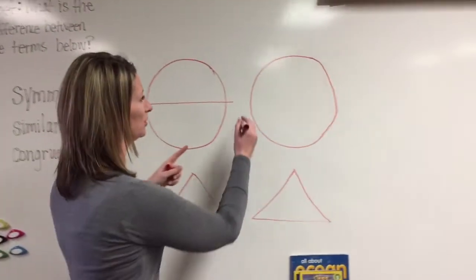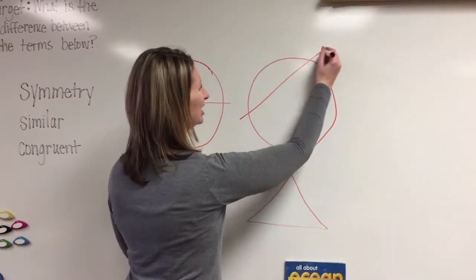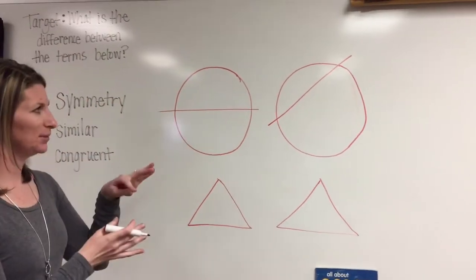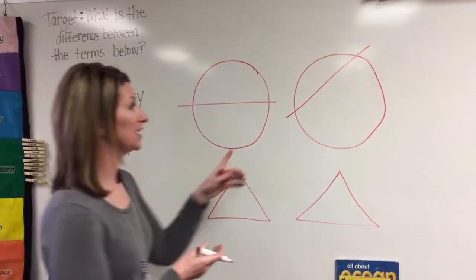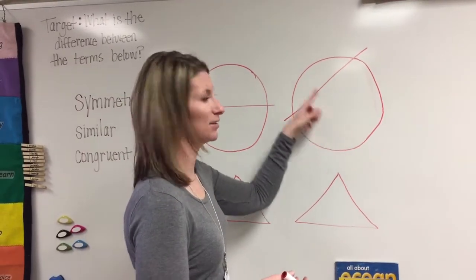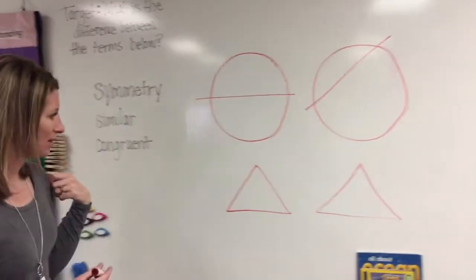Now if I would divide my circle or make my line of symmetry right here, can I fold them over and would they look exactly the same? No, because this side is a lot bigger than this one up here. So good job.